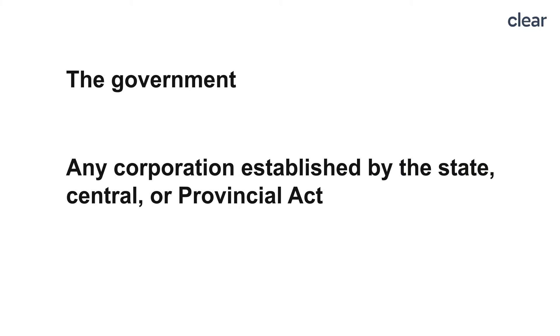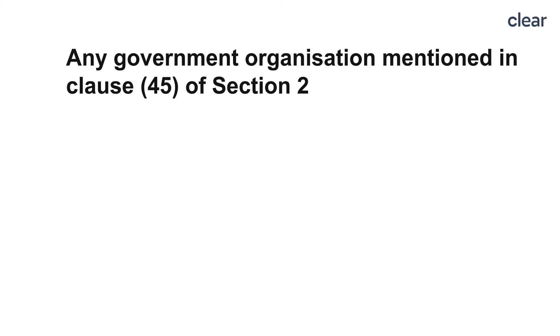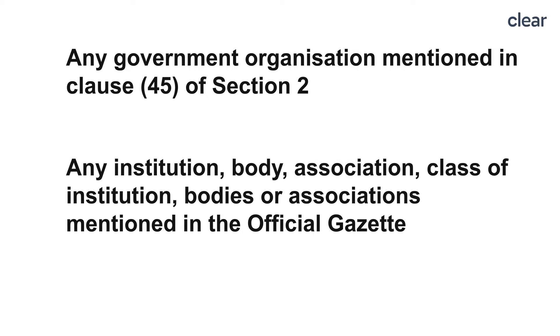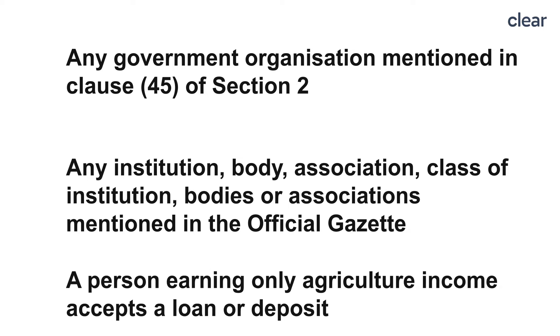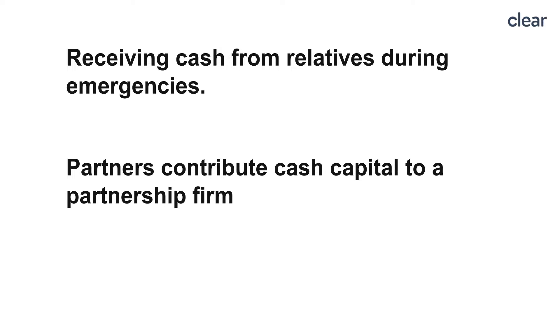Exemptions of section 269SS are as follows: the government; any corporation established by the state, central or provincial act; any post office savings bank, banking organization or cooperative bank; any government organization mentioned in clause 45 of section 2 of the Companies Act 2013; any institution, body, association, class of institution, bodies or associations mentioned in the Official Gazette; a person earning only agricultural income accepting a loan or deposit from another person also earning only agricultural income; receiving cash from relatives during emergencies where the intention should not be to evade taxes; partners contributing cash capital to a partnership firm; and where there is a mere book entry or no receipt of money in cash or any other form.